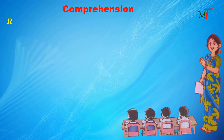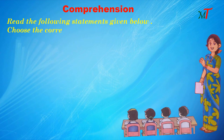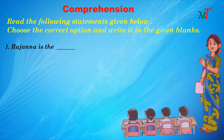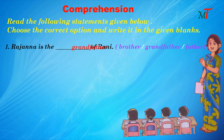Comprehension: Read the following statements and choose the correct option, then write it in the given blank. First one: Rajanna is the dash of Rani. Three options are given: Brother, grandfather, and father. The correct answer is grandfather. So we write grandfather in the blank.